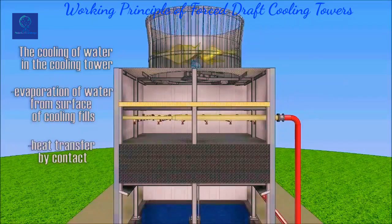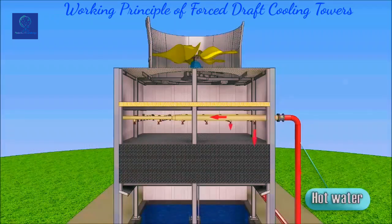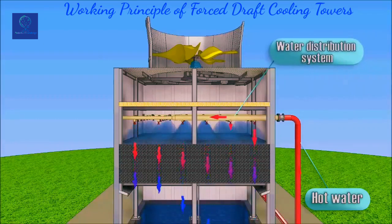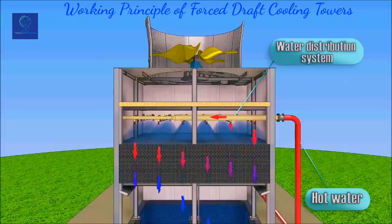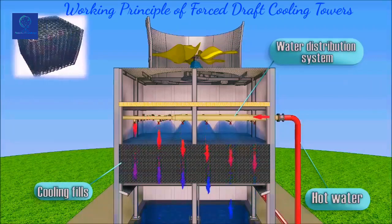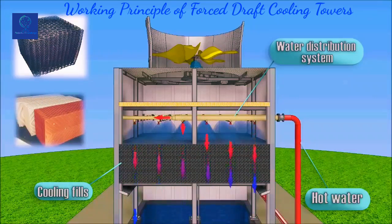Hot water from various sources such as machines or heating processes flows through pipes to the distribution system of the cooling tower, which produces even water distribution to all areas of the fills by spray nozzles. On the fills, a water film is formed, from the surface of which evaporation occurs as the water encounters the air flow.